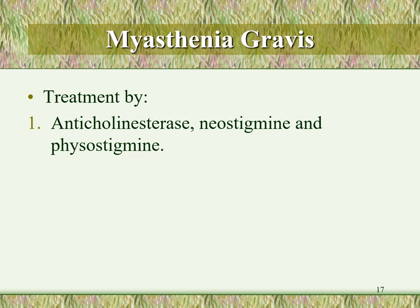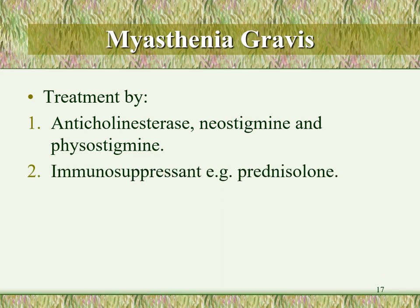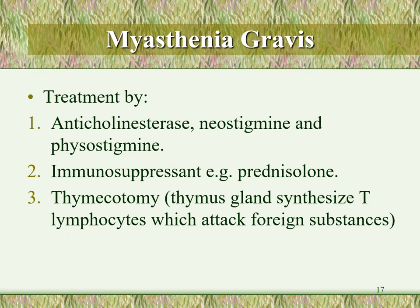Treatment of myasthenia gravis uses anticholinesterases such as neostigmine and pyridostigmine to increase the concentration of endogenous acetylcholine. Although acetylcholine is released in normal concentration, it cannot activate sufficient receptors because many are destroyed by the immune system. By increasing acetylcholine levels, more of the remaining receptors are activated, providing greater muscle contraction. Additionally, myasthenia gravis can be treated with immunosuppressant drugs such as prednisolone, or surgically by thymectomy — removal of the thymus gland, which synthesizes the T-lymphocytes that attack the NM receptors.